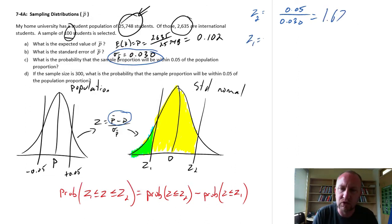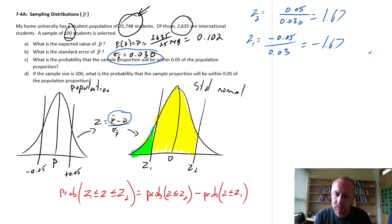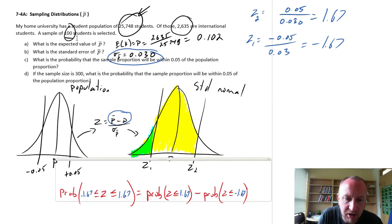And so you can imagine what z1 is going to be. The only difference is that numerator is negative. This is negative 0.05 divided by 0.03, and so this is going to be negative 1.67. Okay, so now I just need to calculate the probabilities that correspond to that. So here I'll change out these numbers. I have negative 1.67, positive 1.67. Same here. This is positive 1.67. And this is negative 1.67. So we need to figure out what those probabilities are.